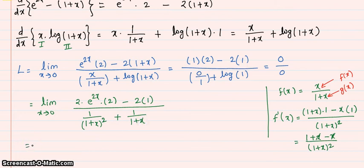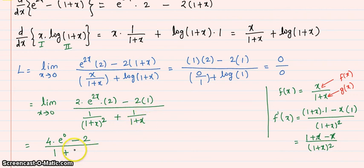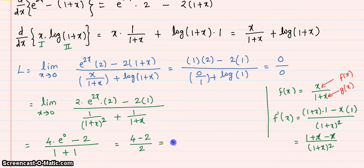Now putting x = 0: numerator gives 4·e^0 − 2 = 4 − 2 = 2. Denominator gives 1/(1)² + 1/(1) = 1 + 1 = 2. So the answer is 2/2 = 1.